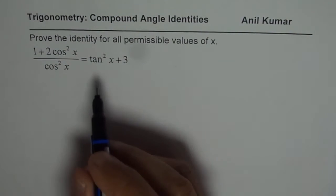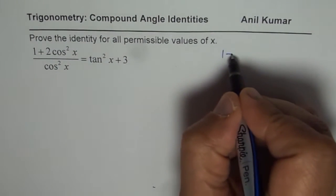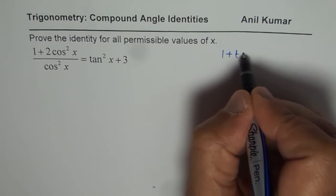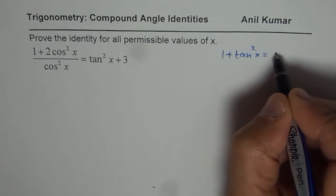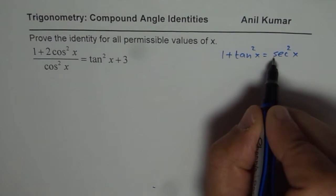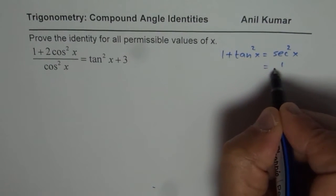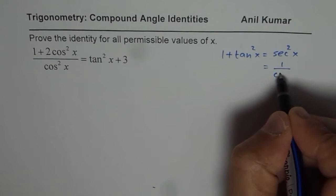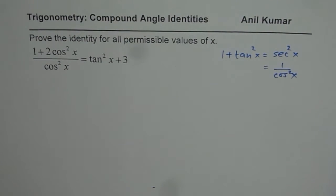A few things which can help you solve this question: 1 + tan²x equals sec²x, and sec²x equals 1/cos²x. Keep that in mind to prove this particular identity.